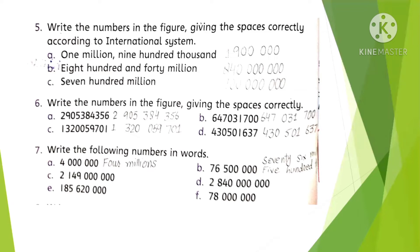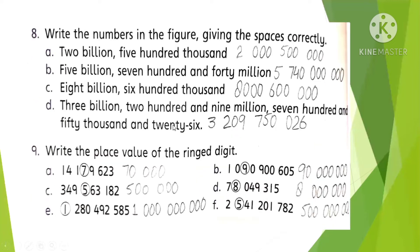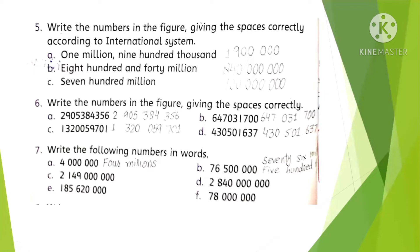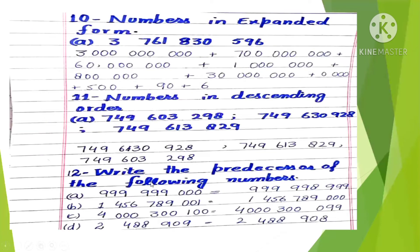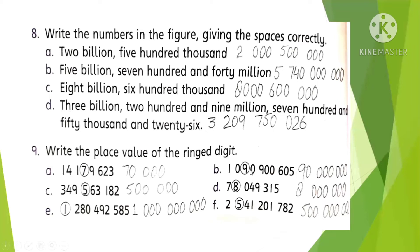Question 6: Write the numbers in figures giving space correctly. As in the previous part, we give space after every three digits — first three digits, then space, then next three digits. We will write all parts giving space after three digits. Question 7: Write the following numbers in words. Part D: four million. For place values, we write the number and add zeros on the right side for remaining digits, writing the whole number in that form.